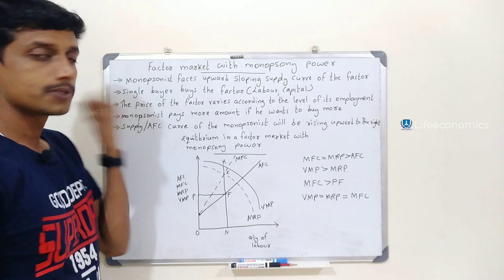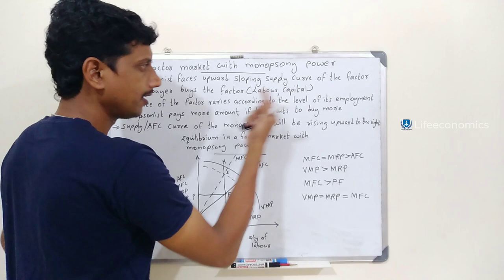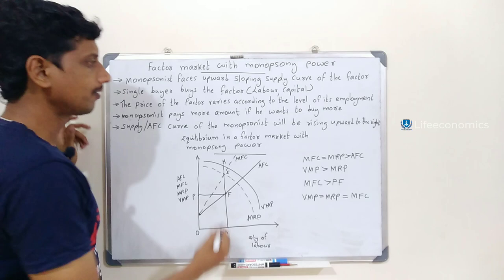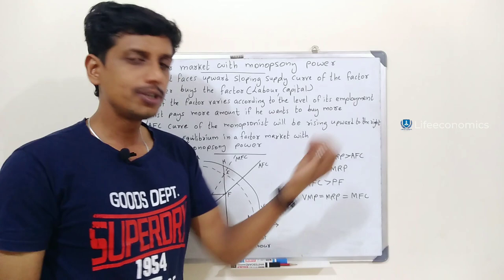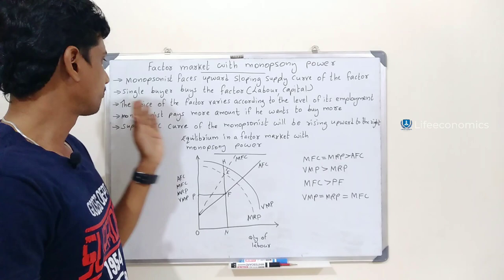The factors here are basically labor and capital. The monopsonist is a key concept here. The price of the factor varies according to the level of employment. If we increase demand, it raises the price.